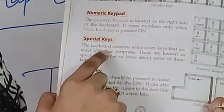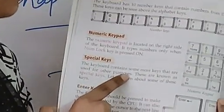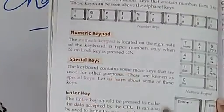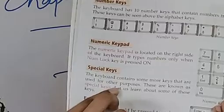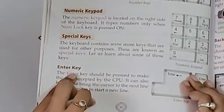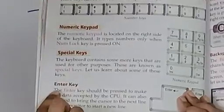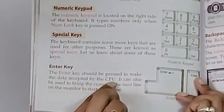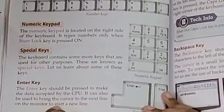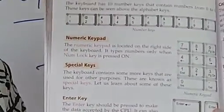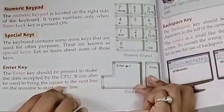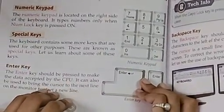Now, the special key. The keyboard contains some more keys that are used for other purposes; these are known as special keys. Keyboard has many keys which contain some other function — keys with some other purpose are called special keys. Enter key is a special key. The enter key should be pressed to make the data accepted by the CPU. It can also be used to bring the cursor to the next line on the monitor to start a new line.